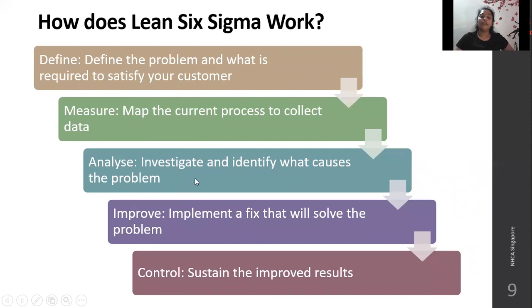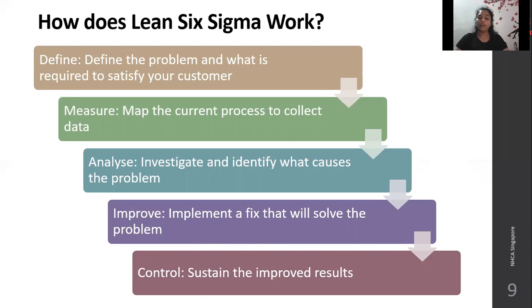In the Analyze phase, you identify where the patient is spending more time in the queue and investigate what is causing the problem. In the Improve phase, you fix the identified problems. For example, in the registration department, if the patient has to spend time filling up unnecessary forms, you remove those unnecessary forms — only what is required by hospital protocol needs to be filled. In the Control phase, you assess whether the new steps positively affect waiting time. If the waiting time is reduced, you sustain the improved result. If not, you analyze deeper to find other solutions. This is how Lean Six Sigma works.